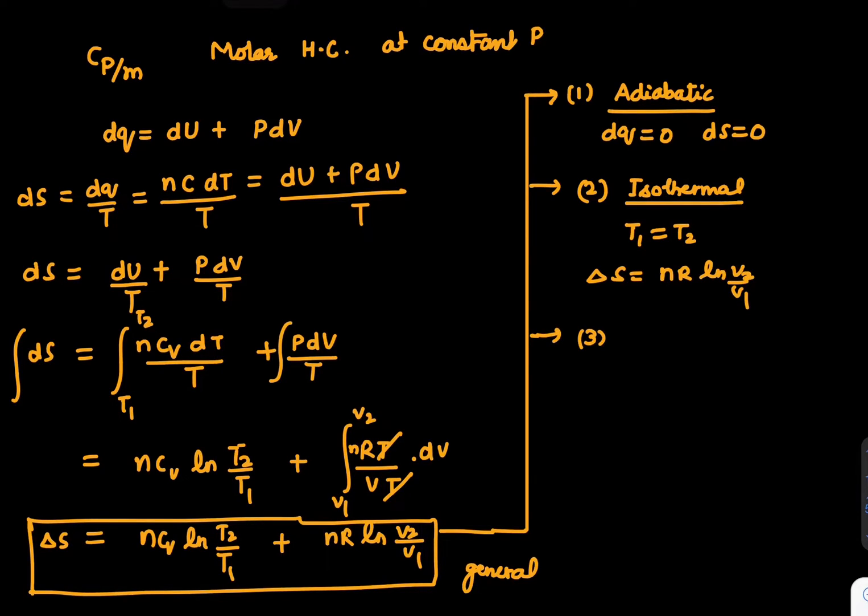Next is the isochoric case. Isochoric means volume is constant, so V1 = V2. Hence, ΔS is written as nCv ln(T2/T1).